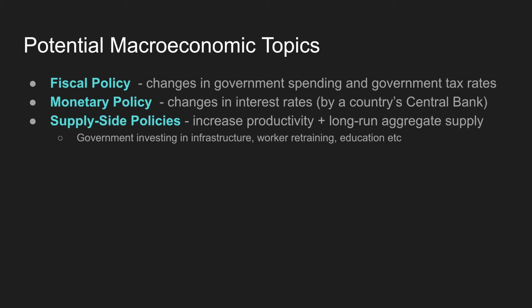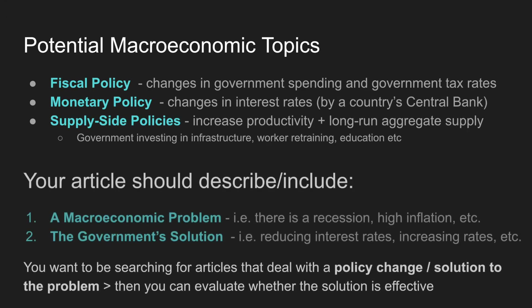Supply-side policies I usually tend to stick away from because they're a bit more difficult, but I'll talk about that more later. When you search for an article, you want to find one that talks about a macroeconomic problem — for example a recession or high inflation — and also the government solution or policy change, like reducing or increasing interest rates. You want articles that deal with a policy change and a solution, because then you can evaluate whether the solution is effective, which makes it a lot easier to write your commentary.